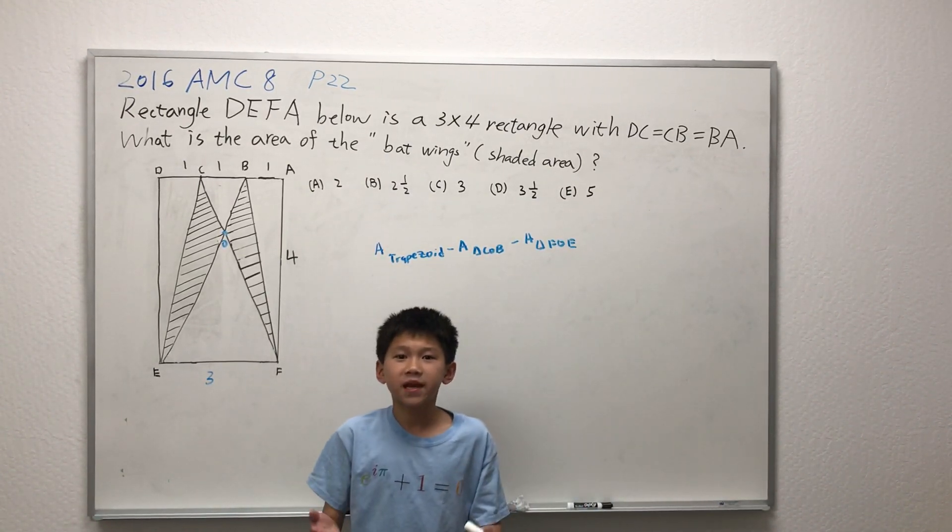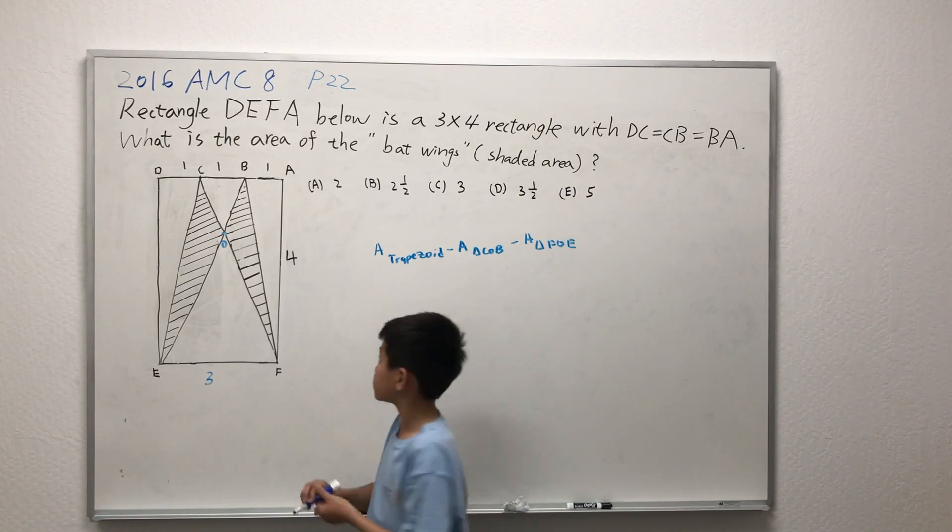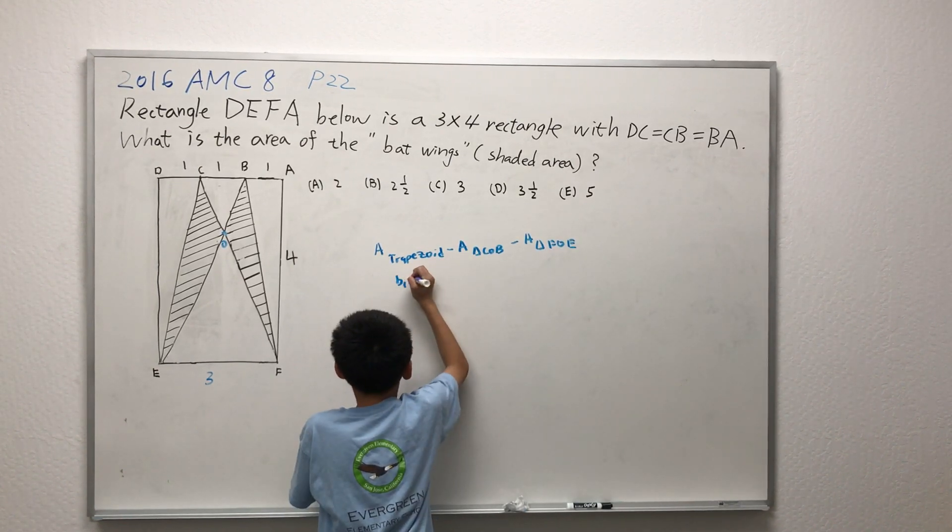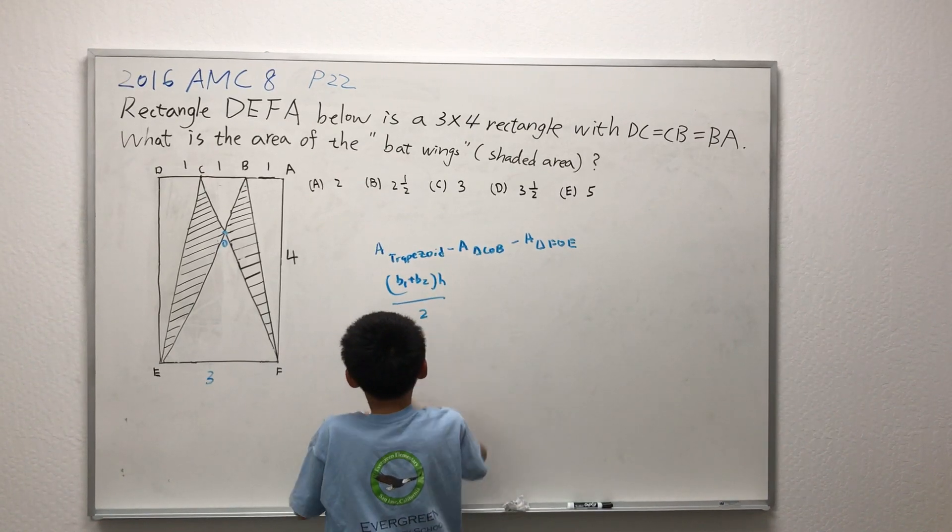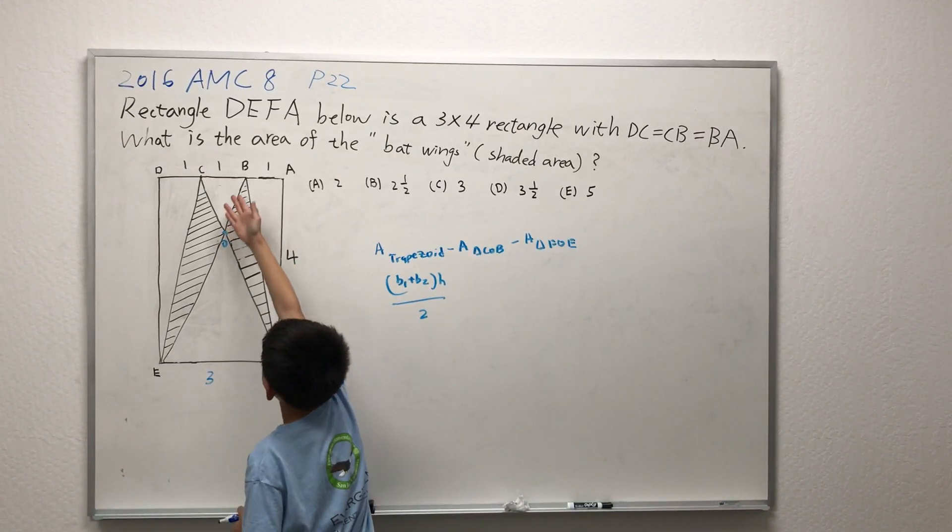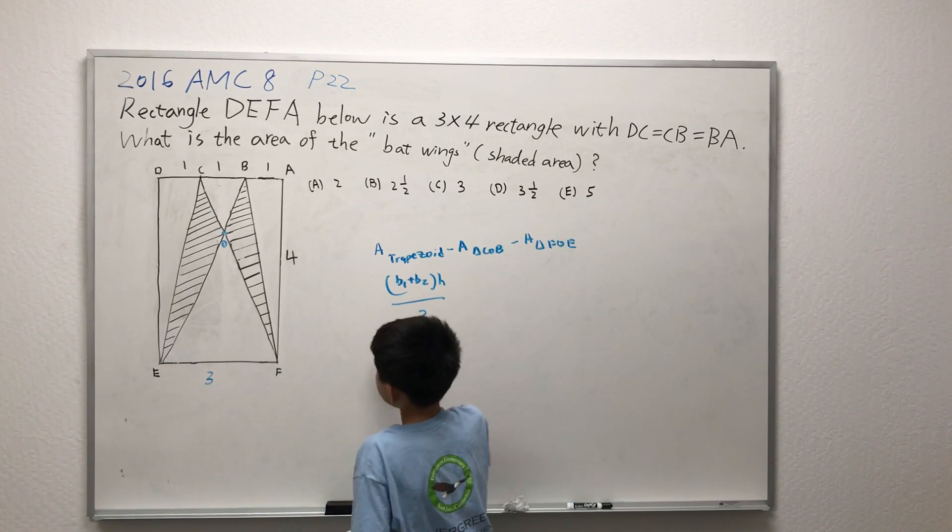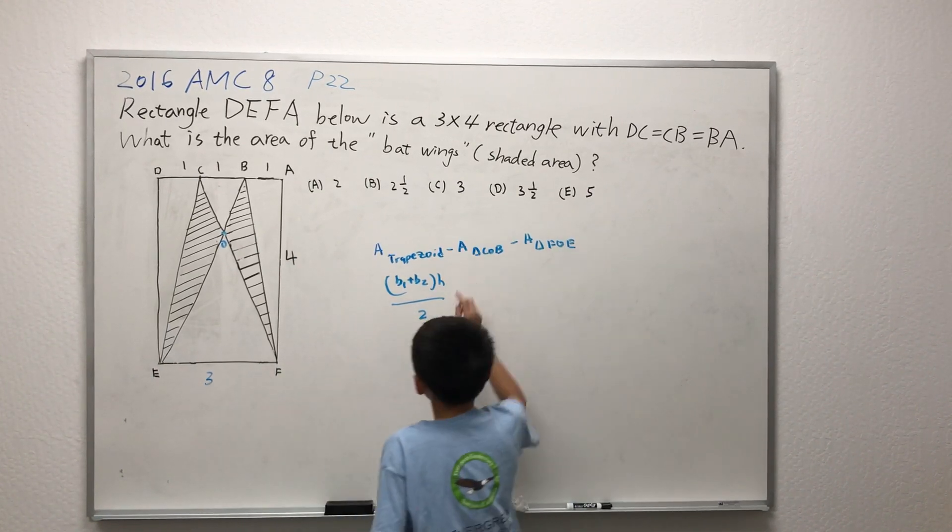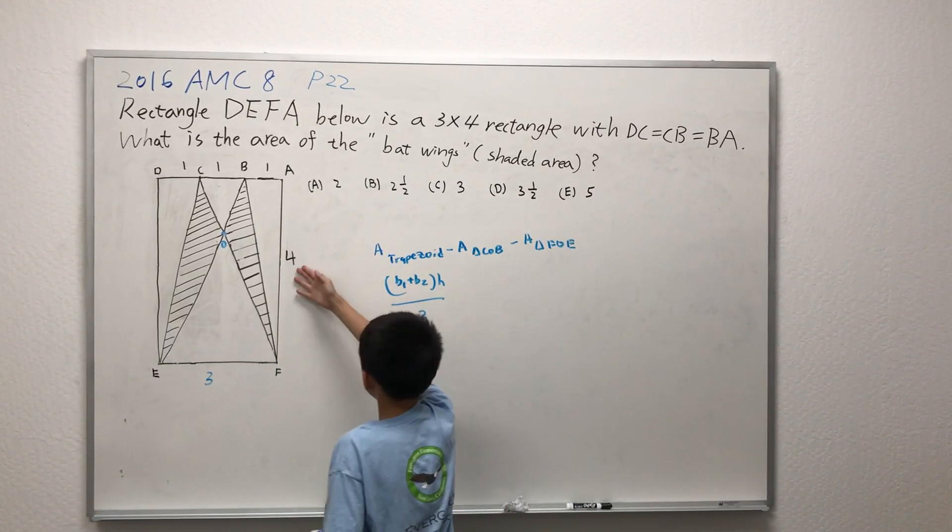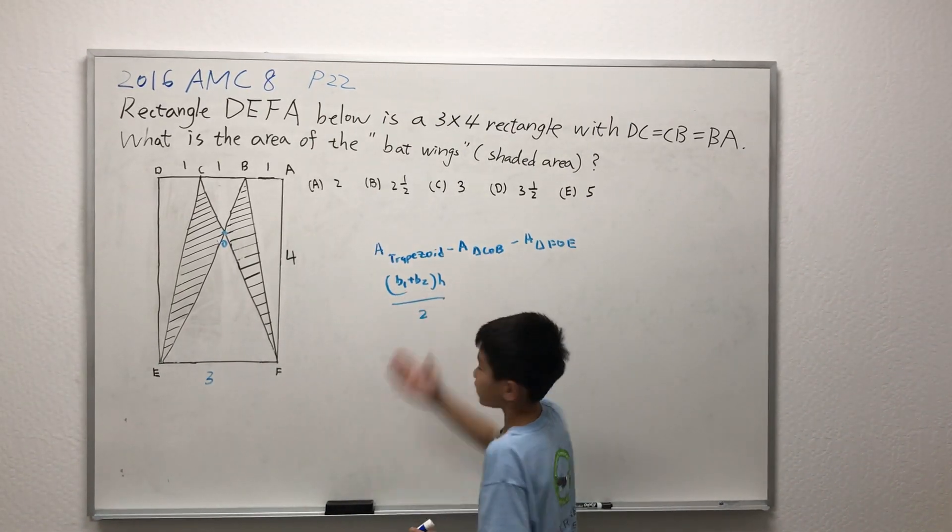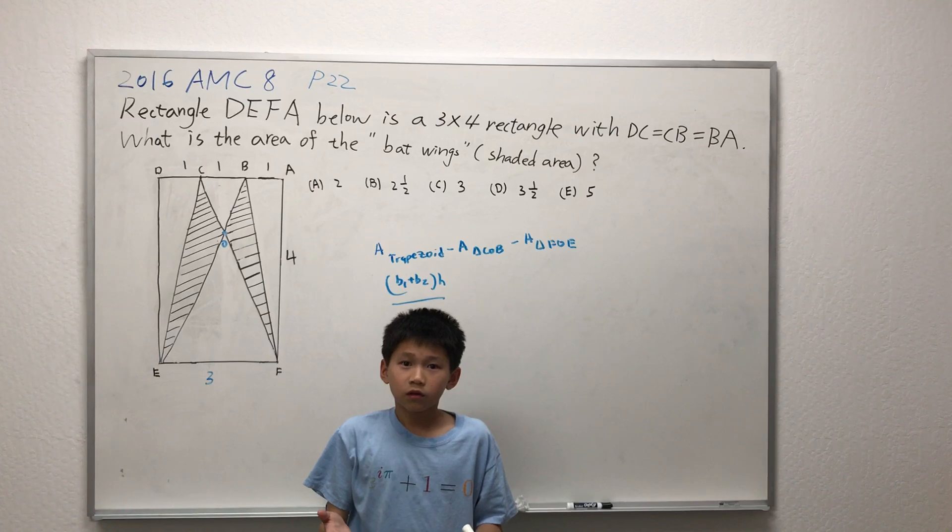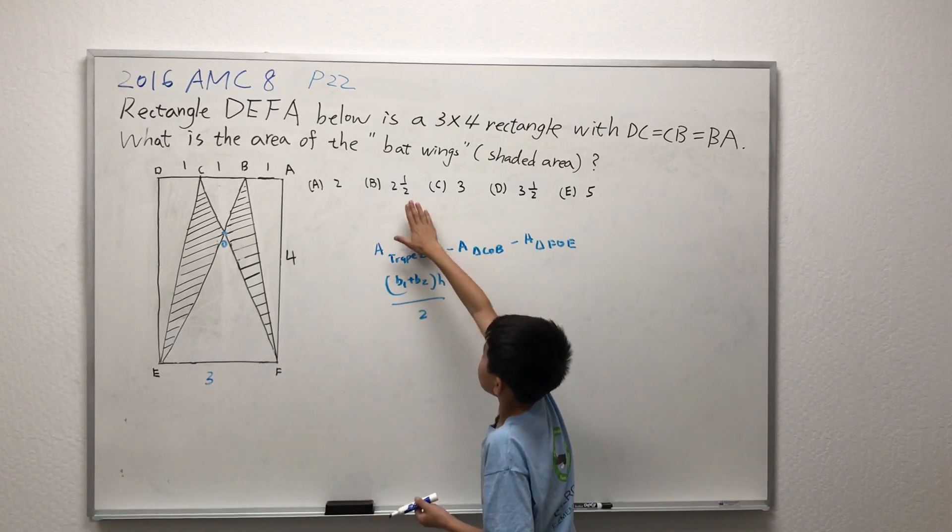We all know that the basic area for the trapezoid is just base 1 plus base 2 times height over 2. Base 1, in this case, is CB, which is 1. Base 2 is EF, which is 3. And the height is simply AF, which is 4. So we have all the values for the area. So the area of the trapezoid is covered.